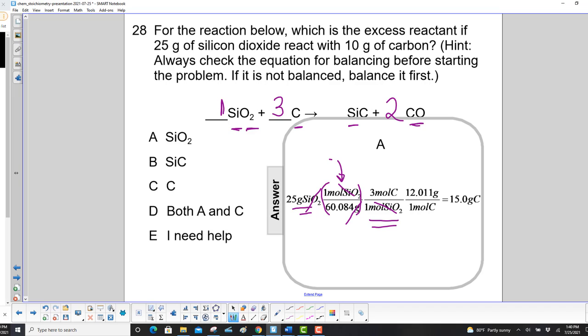And then once again to the periodic table, and we find that one mole of carbon is 12.011 grams. This all cancels out, and we need 15 grams of carbon to make this reaction work.